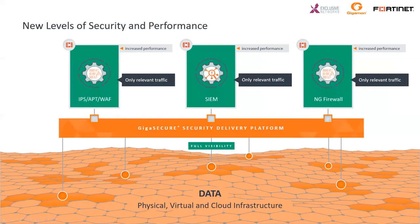When you look at each tool individually, you see a solid color and then another color with lines through it. The solid color is what the tool should and can inspect. The lined color represents irrelevant traffic going through the tool that it should not or cannot inspect, but still has to make the decision to pass on. All those CPU cycles being wasted equals money wasted.